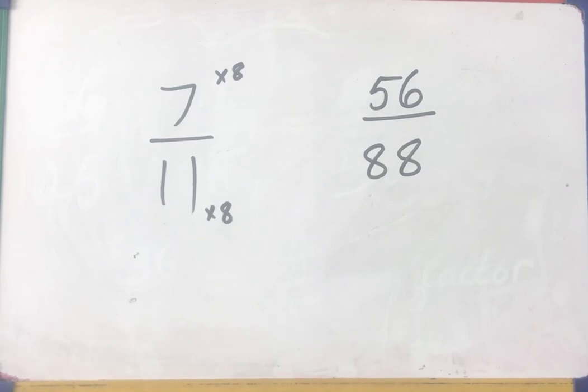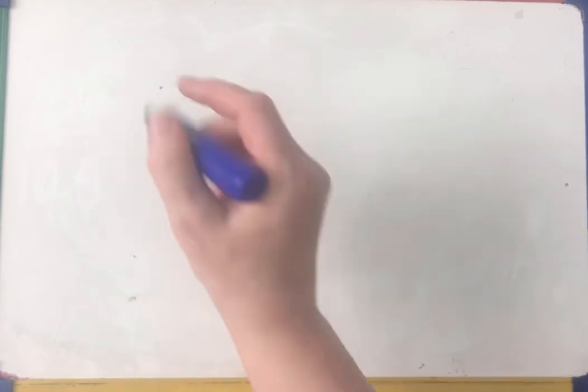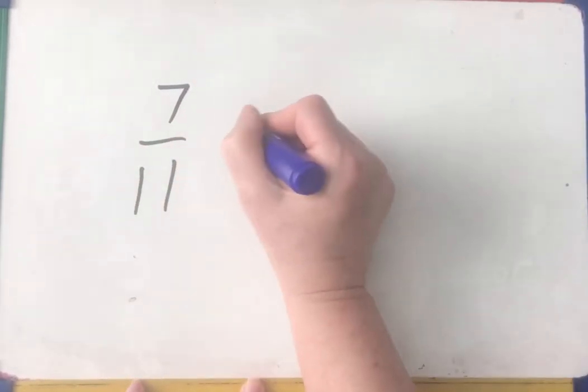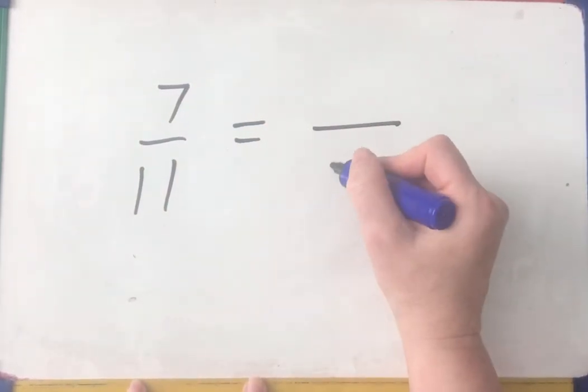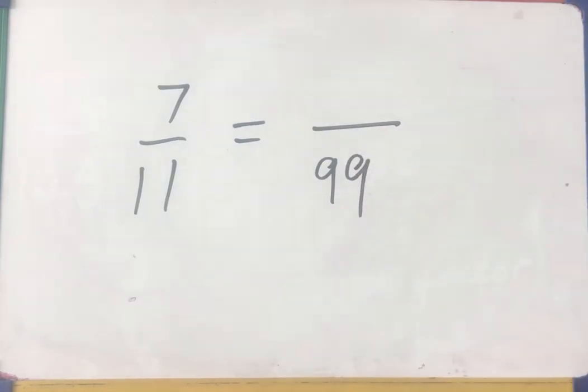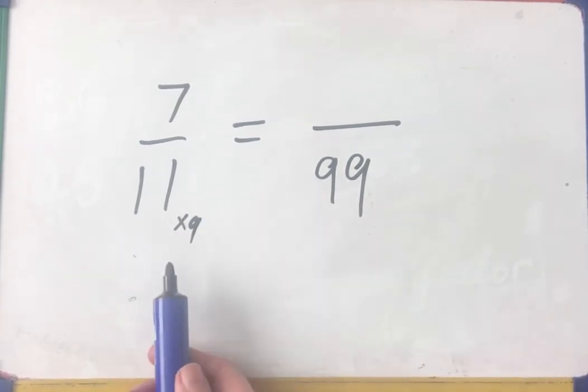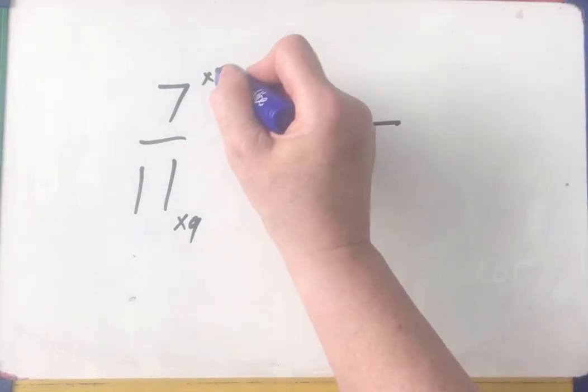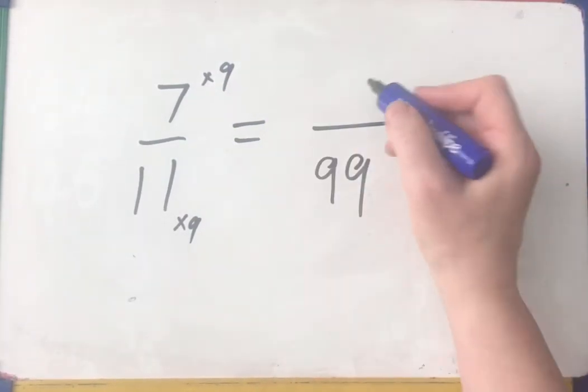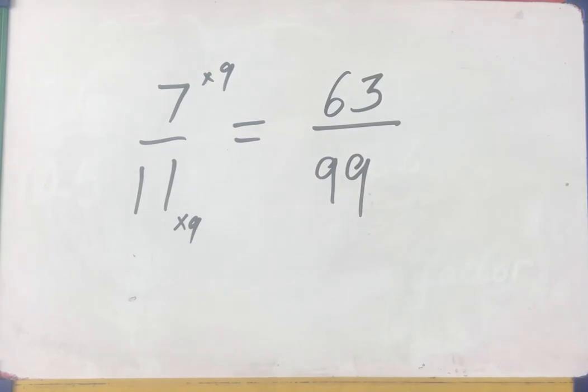If I was given a specific numerator or denominator for this, so I've got 7/11. If I said, right, they need you to find the numerator if the denominator is 99, well, how many 11s go into 99? Good. Hopefully you said 9. If I multiply the denominator by 9, I have to multiply the numerator by 9. 7 nines are 63.